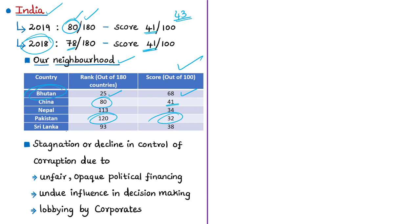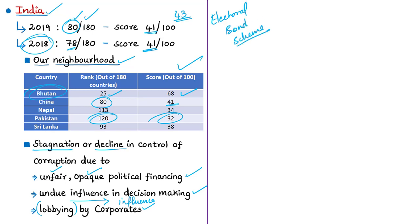The factors contributing to corruption stagnation include unfair and opaque political financing, undue influence in decision making, and lobbying by powerful corporate interest groups. This criticism can be related to concerns raised about electoral bonds in India, as critics argue that electoral bonds ultimately benefit the ruling party only. The index notes that citizens across the world are fed up with corrupt leaders and corrupt institutions.